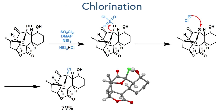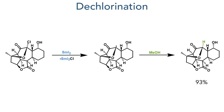With the core ring structure now complete, all that remained in the synthesis was to install the correct oxidation pattern in the final pendant isopropenyl unit. In the course of these studies they found that they could selectively chlorinate the hemiacetal using sulfuryl chloride, DMAP and triethylamine. The sulfuryl group can undergo an SN1 substitution, first being eliminated to form a stabilised carbocation which is then attacked by chloride, forming the product in a 79% yield. This was then dechlorinated in the next step using samarium iodide, which abstracts a chlorine radical forming a more stable samarium(III) complex, and the resulting carbon radical can then react with methanol, forming the dehalogenated compound in a 93% yield.